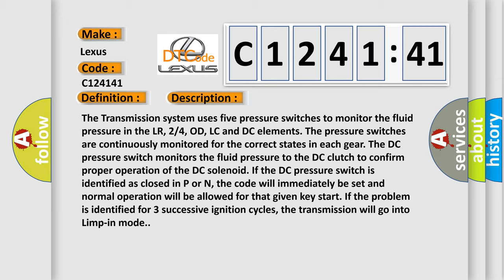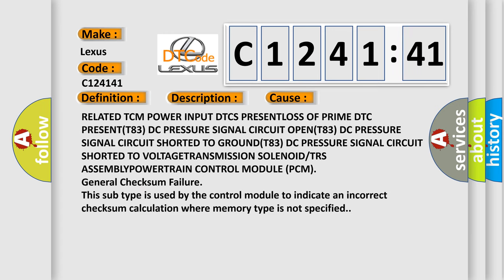If the DC pressure switch is identified as closed in P or N, the code will immediately be set and normal operation will be allowed for that given key start. If the problem is identified for three successive ignition cycles, the transmission will go into limp-in mode. This diagnostic error occurs most often in these cases: